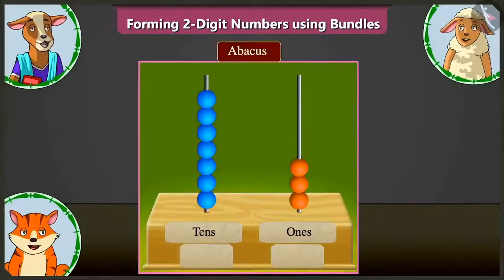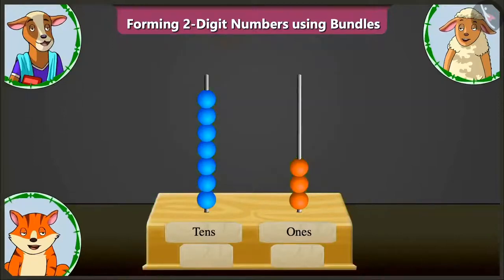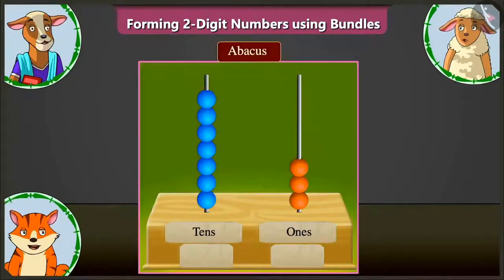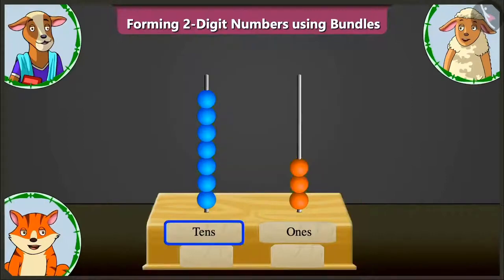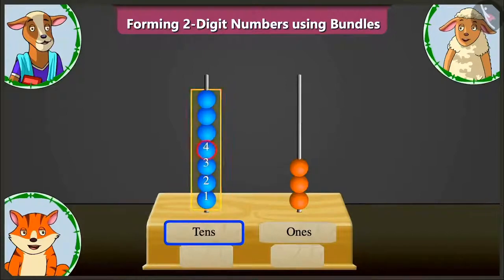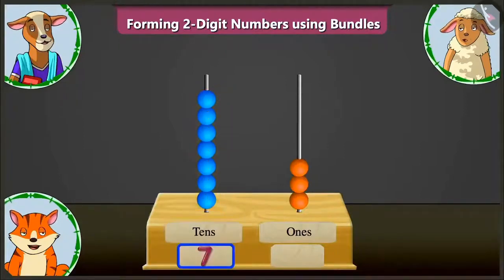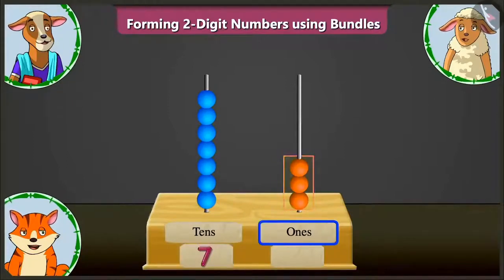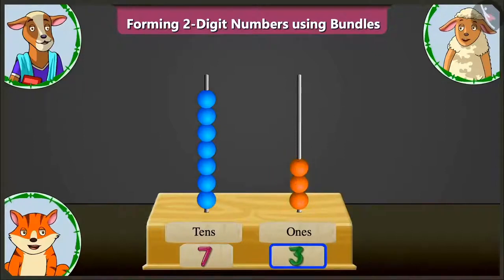Look, there is an abacus given here. You have to look at it and form a number. Lily, you tell us. In the abacus given here, in the tens box, there are one, two, three, four, five, six, and seven beads. So in the tens box, we have to write seven. Very good. Now in the ones box, in the abacus, there are one, two, and three beads. So in the ones box, we have to write three.